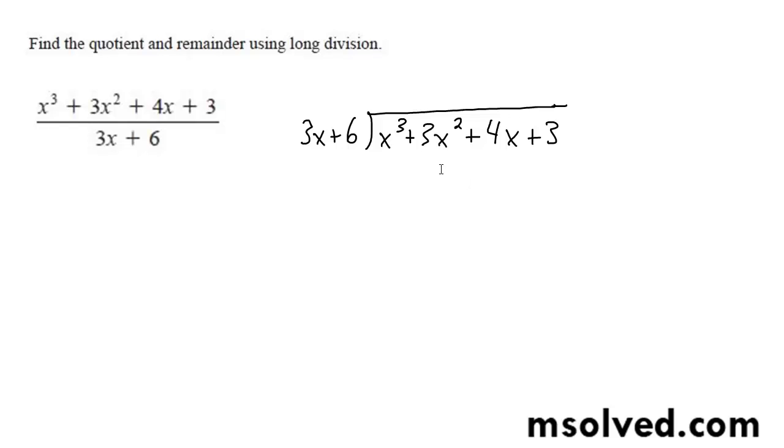Alright, so long division. 3x fits into x cubed 1/3 x squared times, so you multiply this through, we get x cubed, and then 1/3 x squared times 6 is going to be plus 2x squared. Switch the signs, these cancel out, and we're left with x squared down here.